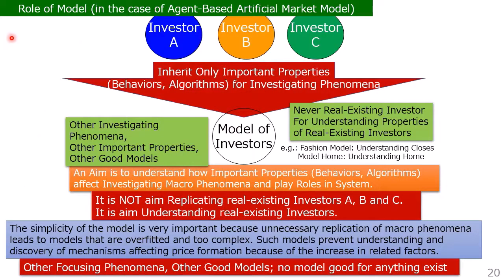In the case of an agent-based artificial market model, each investor is modelled with only important behavioral properties for investigating macrophenomena. The aim is to understand how important properties affect macrophenomena and play a role in the system — not to replicate real existing investors A, B, and C, but to understand real existing investors. So the simplicity of the model is very important, because unnecessary replication leads to models that are overfitted and too complex. Such models prevent understanding and discovery of mechanisms affecting price formation because of the increase in related factors. No single model is good for everything.